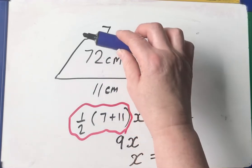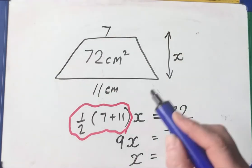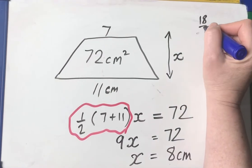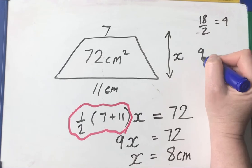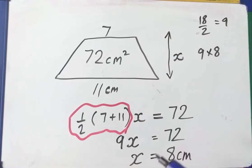Let me just double check. So 11 plus 7 is 18. Half the sum of the parallel sides times the space between them. So 9, 8 are 72. So I've just done a quick check in my head and 8 centimeters is lovely.